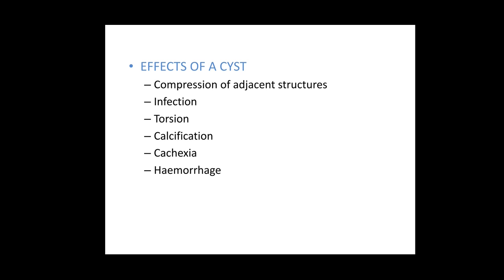The effects of a cyst are essentially the complications, depending on the site or location of the cyst. As the size increases, it can compress adjacent structures like veins, arteries, and nerves. Other complications include infection, haemorrhage, torsion of a pedunculated cyst such as an ovarian cyst, and calcification. Cachexia may be seen as part of the systemic effects of cancer if the cyst is part of a cystic malignant tumour of the ovary.